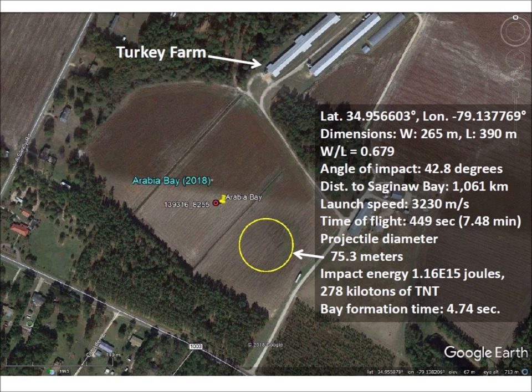The width-to-length ratio of the bay indicates that the glacier ice projectile hit at an angle of approximately 43 degrees. Ballistic equations and laws relating energy to crater size estimate a launch speed of 3,230 meters per second, a flight time of 7.48 minutes, and an energy yield equivalent to 278 kilotons of TNT. The bay formed in 4.74 seconds.